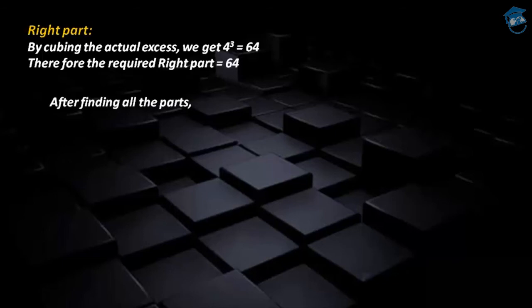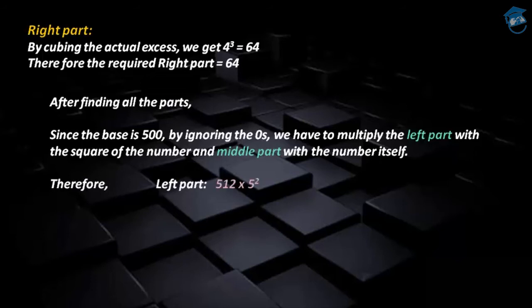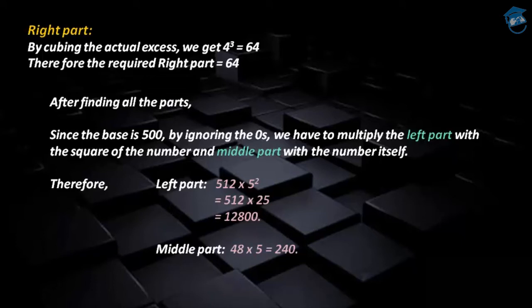Now after finding all the parts, we have to take the base 500 and ignore the zeros. If we ignore the zeros, we get a new number called 5. Now we have to multiply the left part by the square of 5 and the middle part by 5. So the left part gives us 512 into 5 squared, which is 512 into 25, equals 12800. And the middle part gives us 48 into 5, which equals 240.